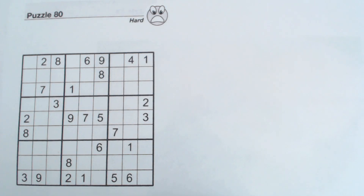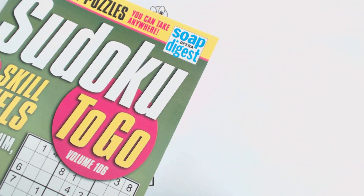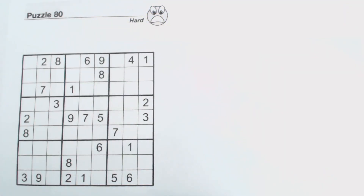Hello everyone. This is Sudoku Primer video number 95. It's going to be an answer sheet to solving puzzle number 80, which is a hard puzzle from Sudoku to Go, volume 106 by Soap Opera Digest. The previous video was a pop quiz, where I just fill in numbers and don't explain why, and you see if you can follow along and see why I placed each number. In this video I'm going to explain why I placed each number. You may want to watch the previous video first.